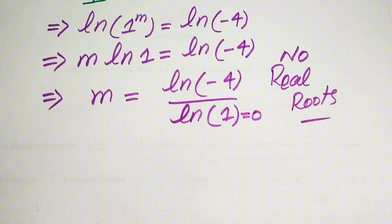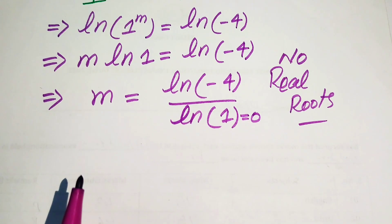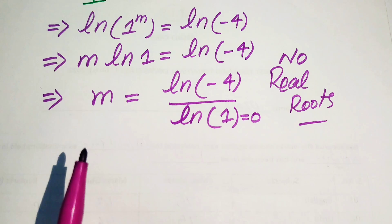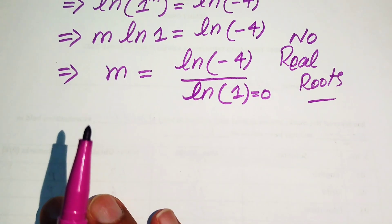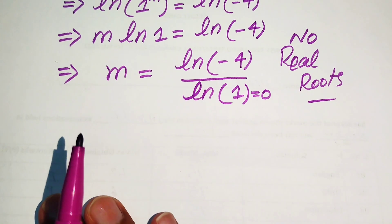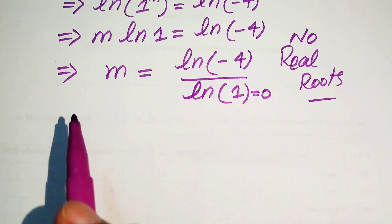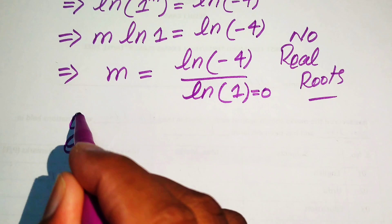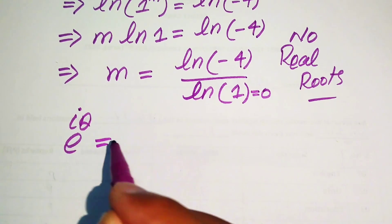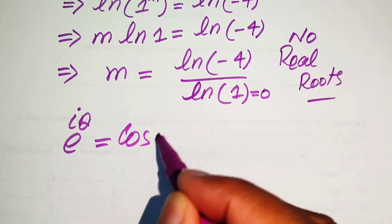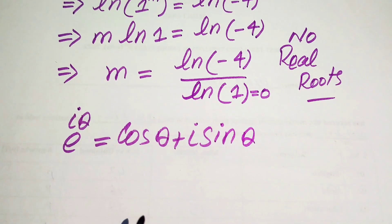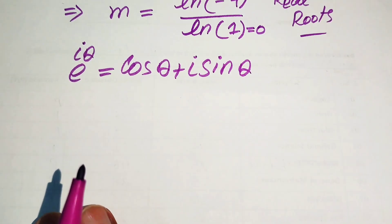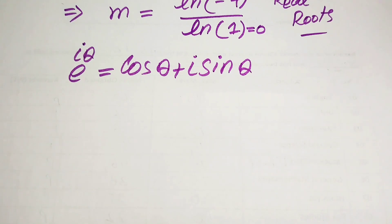Since this equation has no real roots, it must have complex roots. To find those complex roots, we need Euler's identity, which states: e to the power of iota theta equals cos of theta plus iota sine of theta.